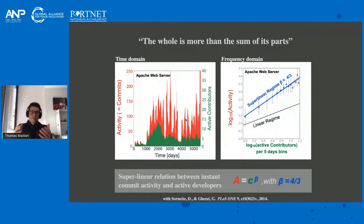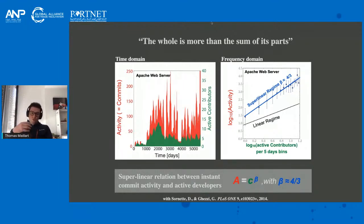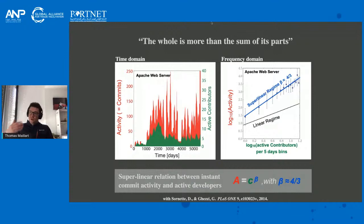What we found, in a nutshell, was a quantitative verification of the adage by Aristotle — the whole is more than the sum of its parts. The more people were active in this community over a time window of around five days, the even more people were producing. The green line on the graph is the number of active people over time, and the red spikes are the contributions made to the Apache code. The more people are there at some point to contribute, the even more contribution there will be.